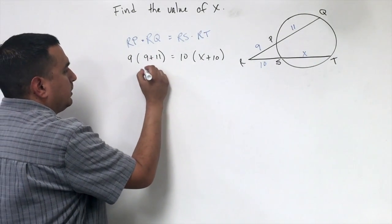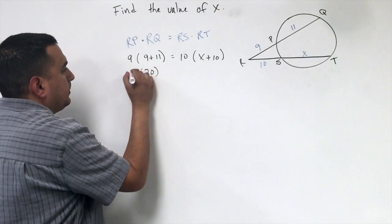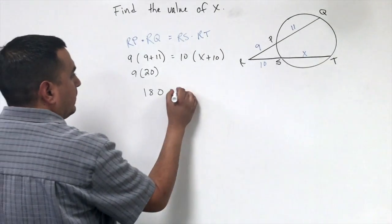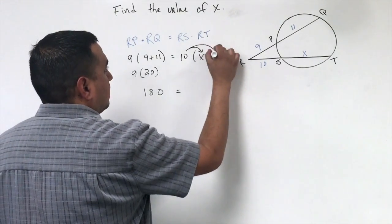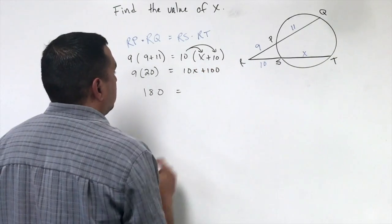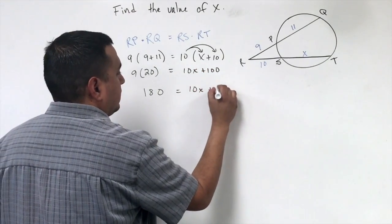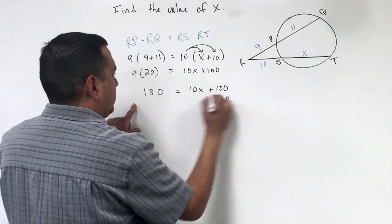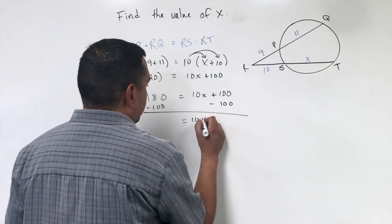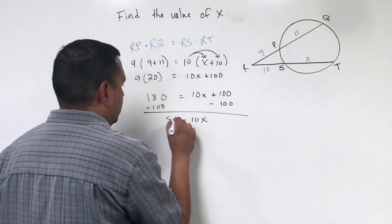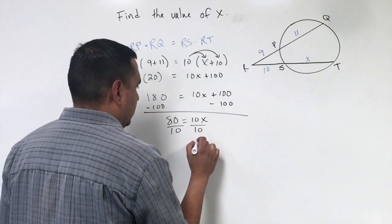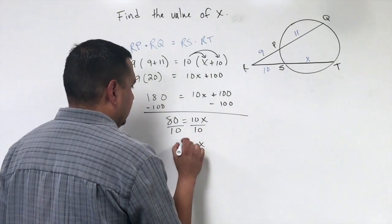That's going to be 20. So 9 times 20 is going to be 180. Then if I distribute here, that's going to give me 10X plus 100. Bring this down. I'm going to subtract 100 from both sides. So that tells me 10X is 80. And if I divide by 10 on both sides, that tells me that X is going to be equal to 8.